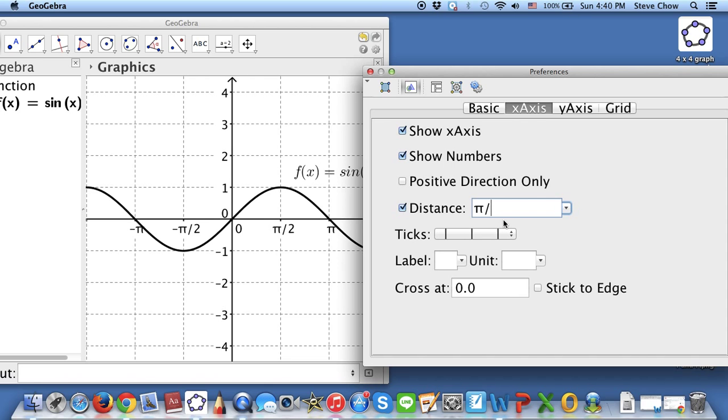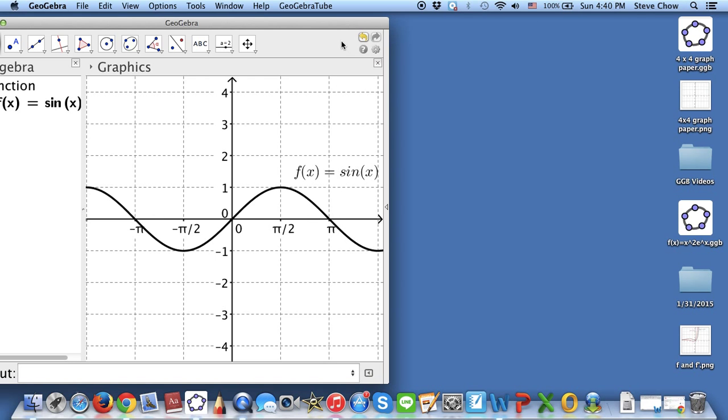If you change this to pi over 4, it's going to show you like this. But it won't show you the pi over 4, like the numbers right here. So let me just keep it for pi over 2, like this. So this is it.